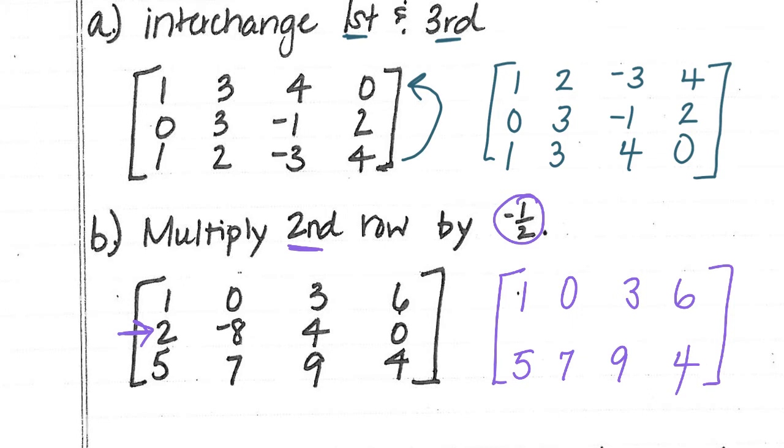Negative 1/2 times 2 is negative 1. Negative 1/2 times negative 8 is 4. Negative 1/2 times 4 is negative 2. And negative 1/2 times 0 is still 0. So remember, we only changed this row right here. So this is the row that was changed.